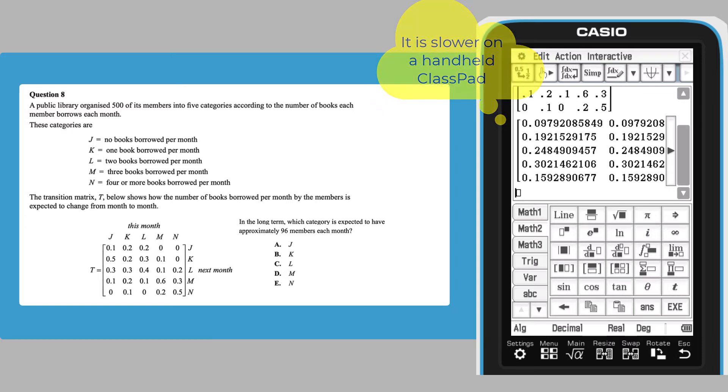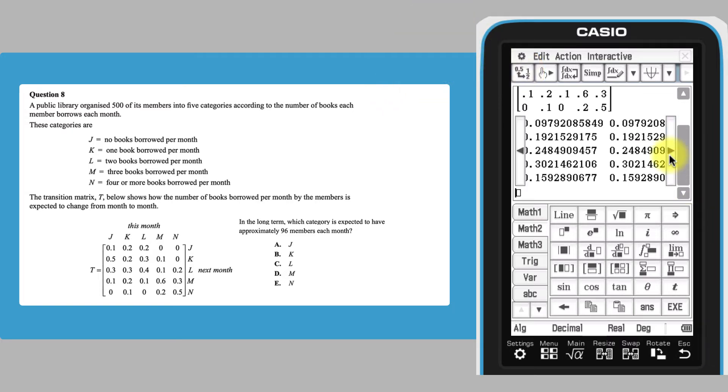This output provides the steady state of the problem. The repeated values in each row give us the proportions of the steady state.